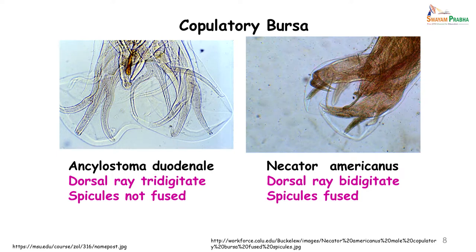The copulatory bursa also helps differentiate the adult worms. In Ankylostoma duodenale, the dorsal ray is tridigitate, as seen in the picture on the left, and the spicules are not fused. Whereas in Necator americanus the dorsal ray is bidigitate — there are only 2 divisions — and the spicules are fused.